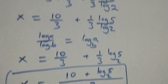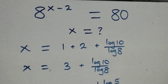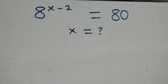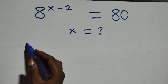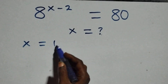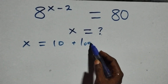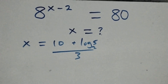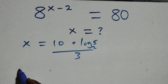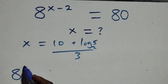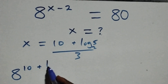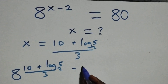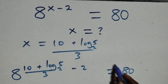Then let's check if this satisfies the given problem. We substitute the value x equals 10 plus log base 2 of 5, all over 3. That is, we have 8 raised to power (10 plus log base 2 of 5, all over 3) minus 2, equals 80 on this side.